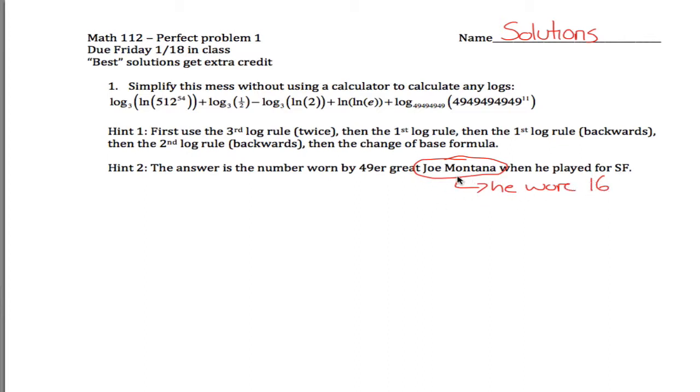I know he was 3 in college. I think he was 3 in college at Notre Dame, but with the 49ers he was number 16, so supposedly they should be equal to 16. And to get that, we're supposed to use a bunch of log rules.